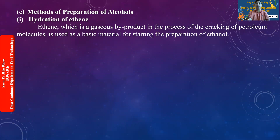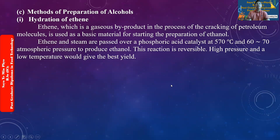By-products are formed in the process of cracking the petroleum molecule. The petroleum molecule is a starting material for the preparation of ethanol. Phosphoric acid is used as a catalyst at 570 degrees Celsius and 60 to 70 atmospheres of pressure to produce ethanol.